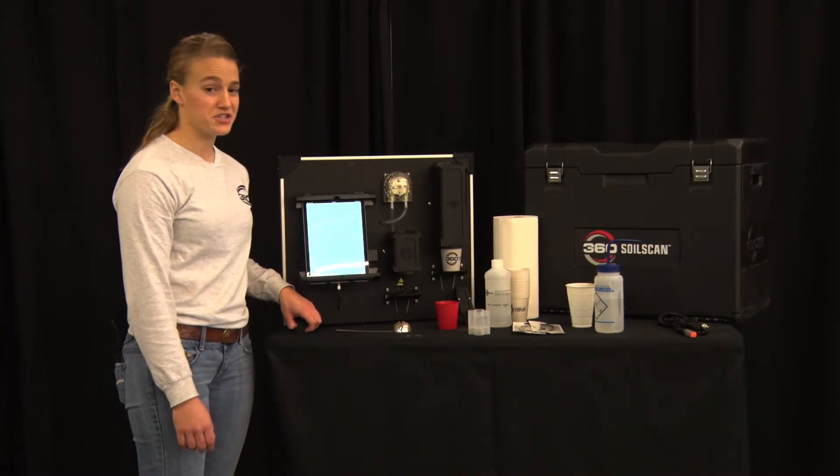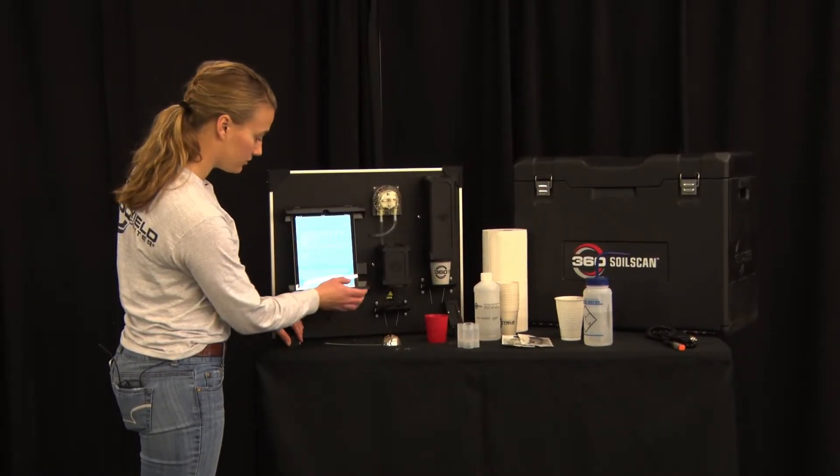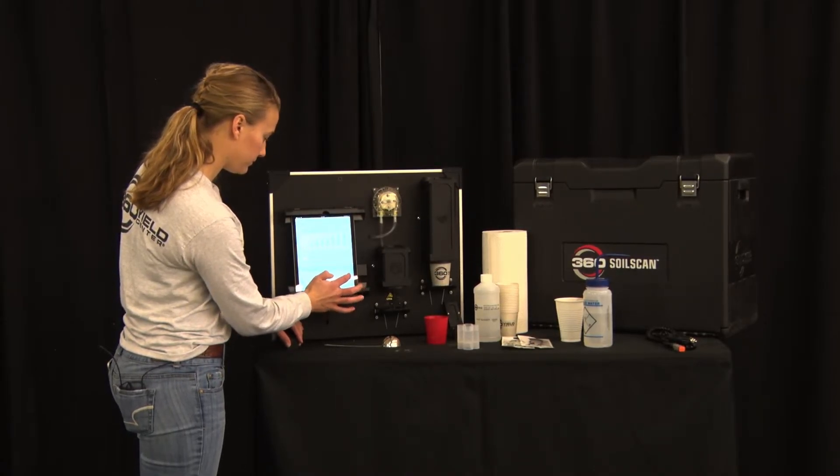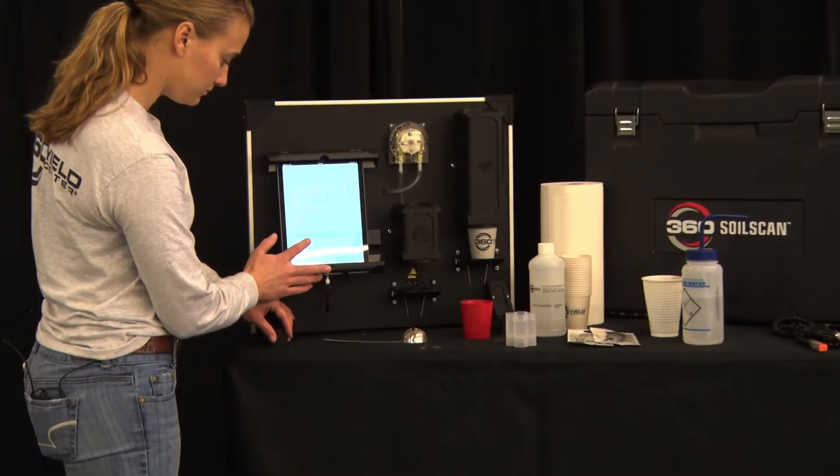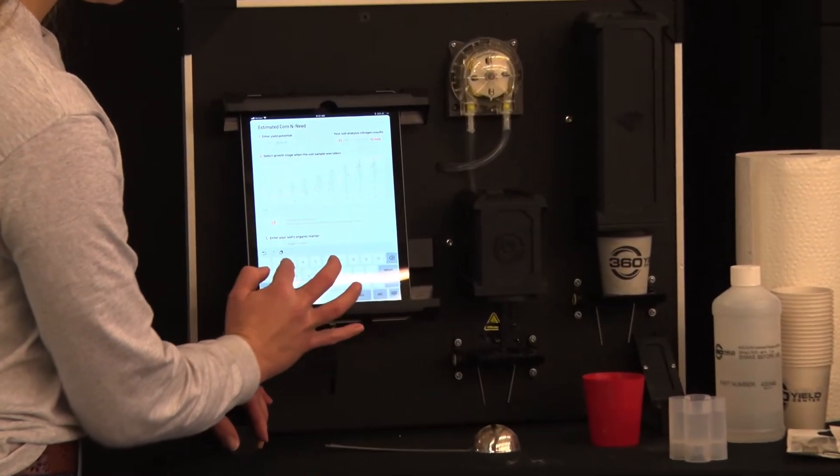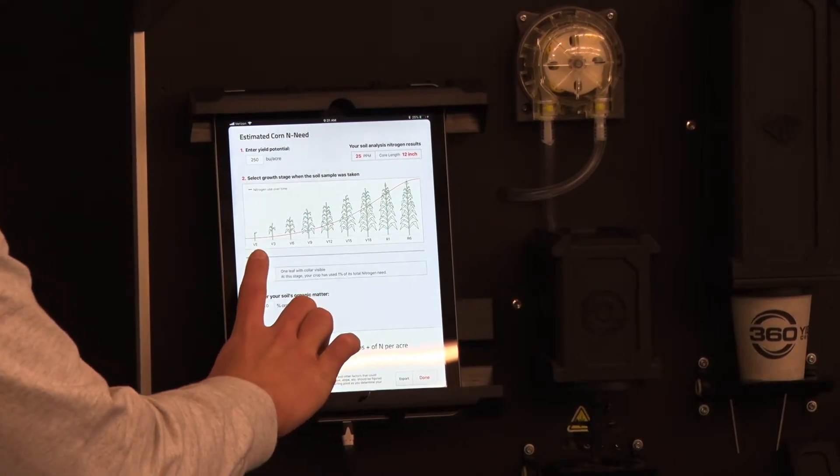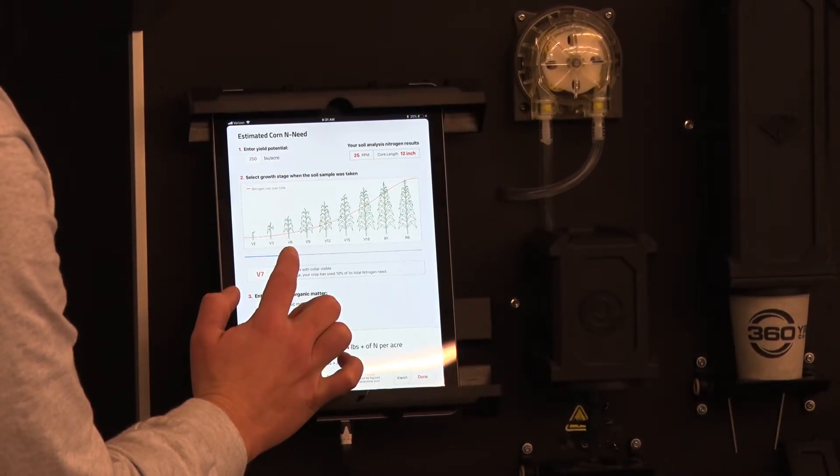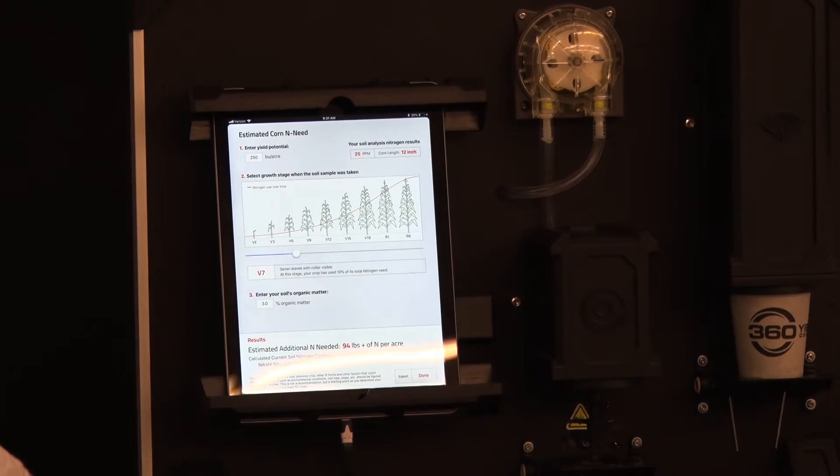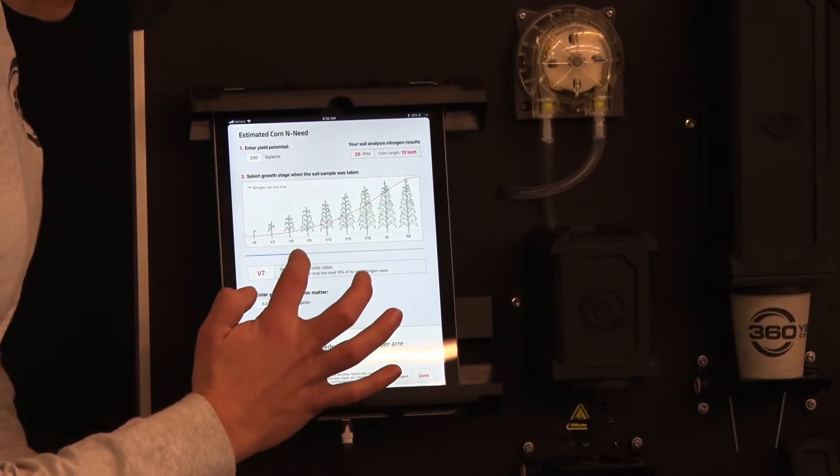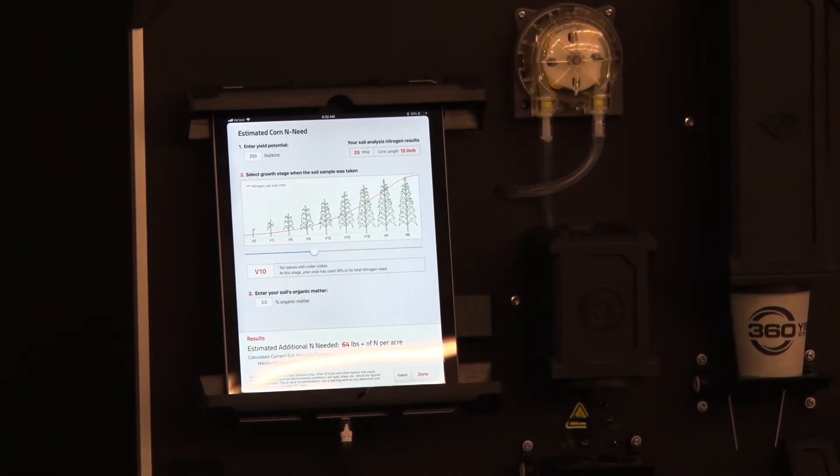Here is where you will estimate the additional n that you will need for your field. So first you're going to enter your yield potential and any organic matter that you have. Then you will select the growth stage from when the sample is taken. If this sample was taken when the corn was at V6 you would need 94 pounds of n per acre. If it was at V9 you would need 64.